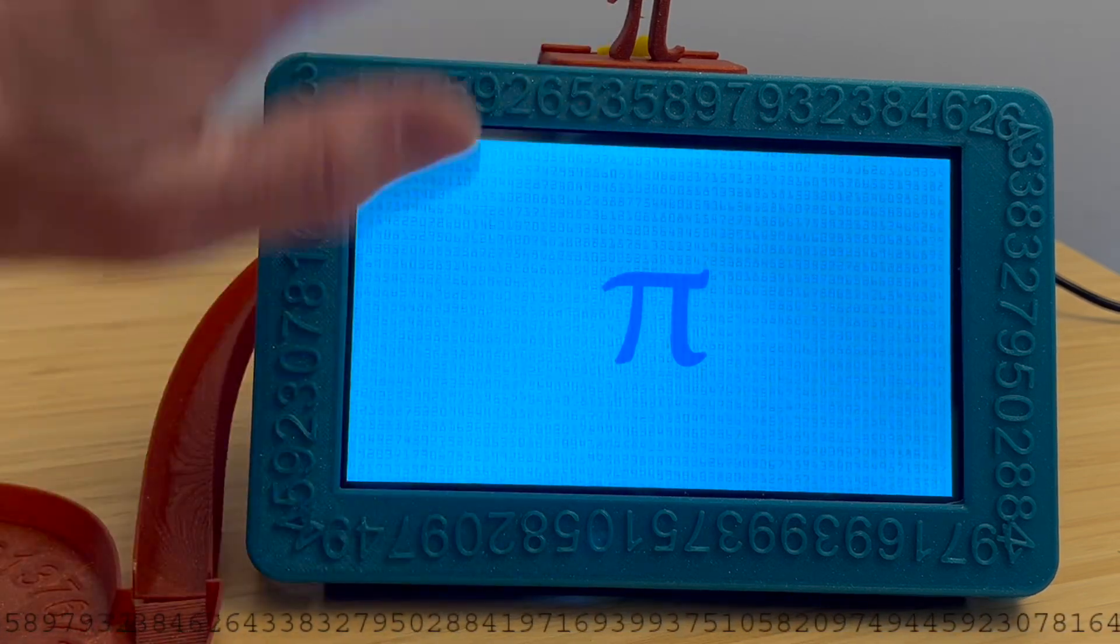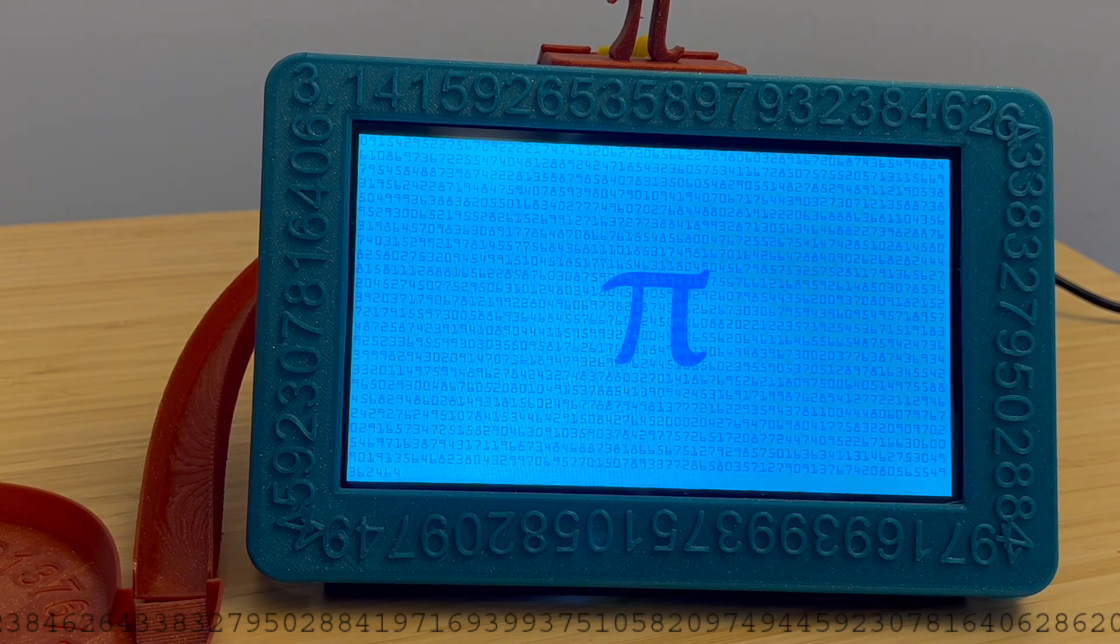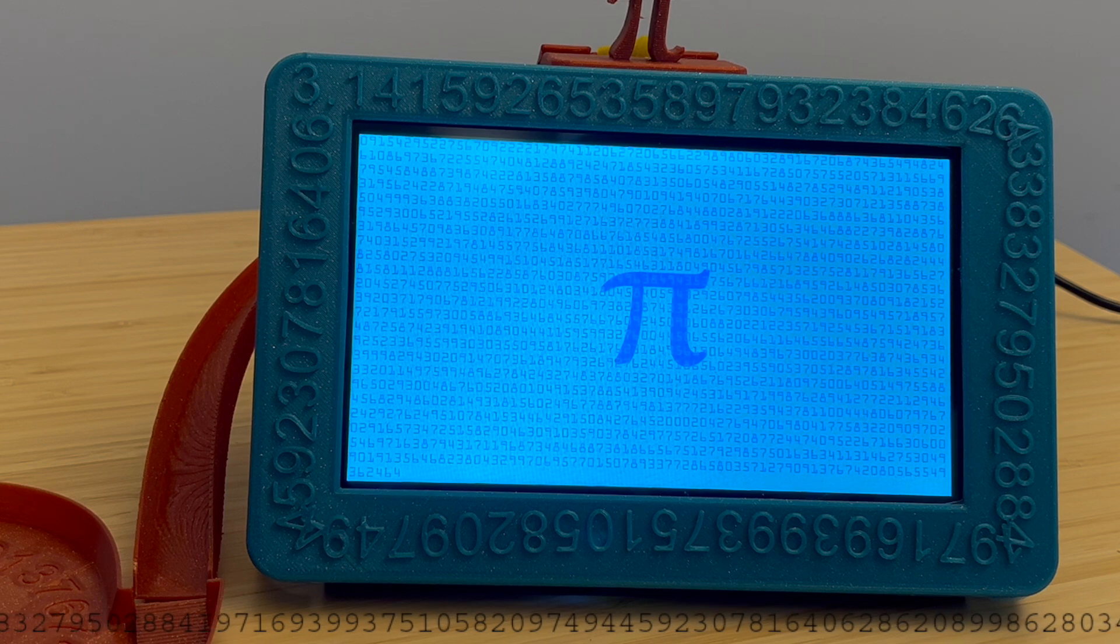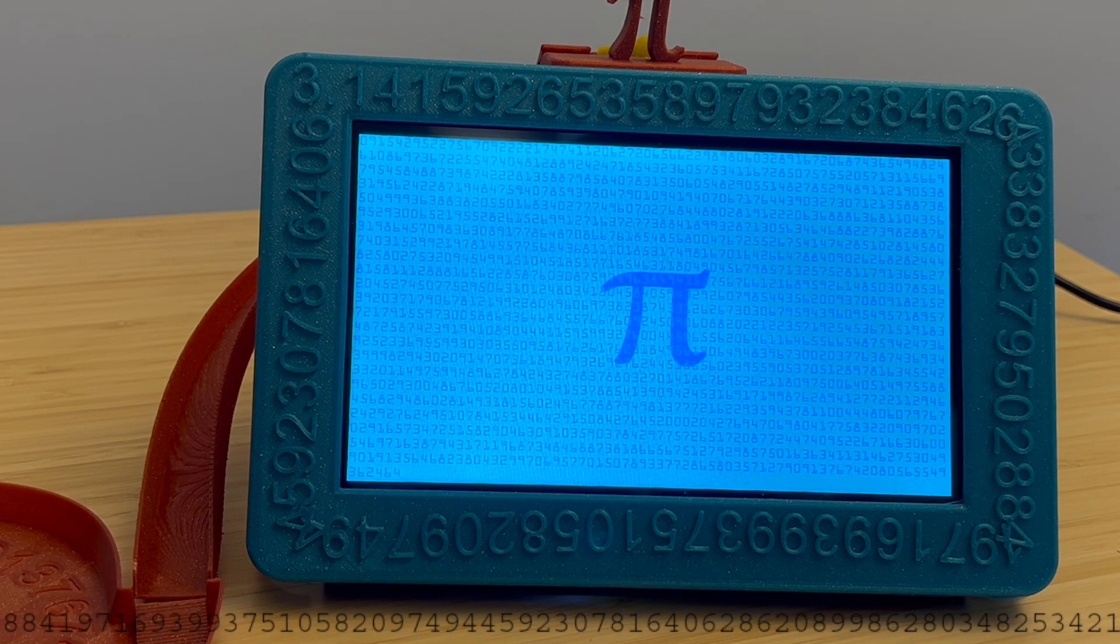If you're curious what the hundred thousandth digit of Pi is, there it is, it's four. Anyway, I thought that was fun.